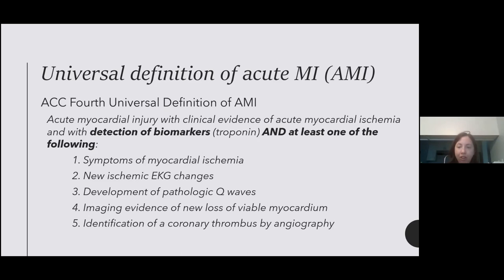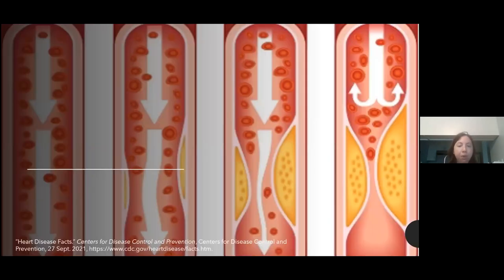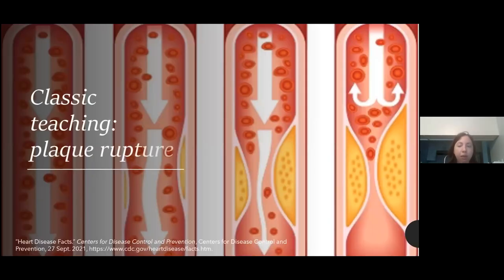As a reminder, the ACC guidelines for secondary prevention in patients who have had acute coronary syndrome or an MI — it's the four magic pills: aspirin, ACE-I or ARB, beta blockers, and high-intensity statin. So when a patient meets this criteria, they should be treated with these medications. If we think about our classic teaching of what is an MI, we think about plaque rupture. This shows us the lovely development of plaque, plaque rupture, blood flow stoppage — your classic obstructive paradigm.